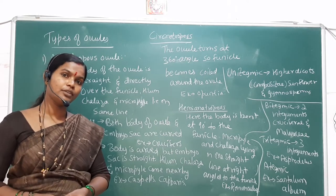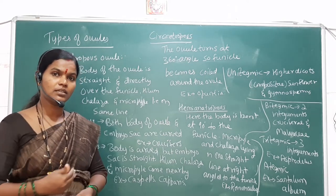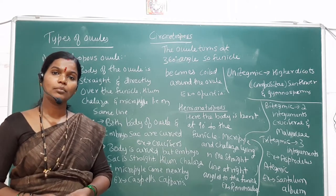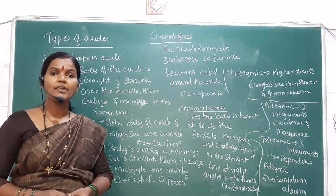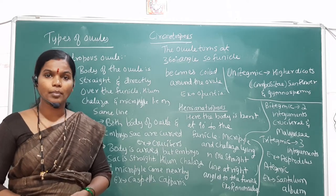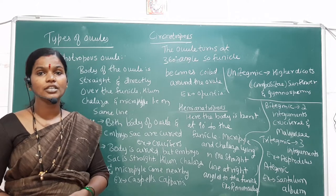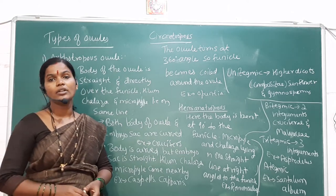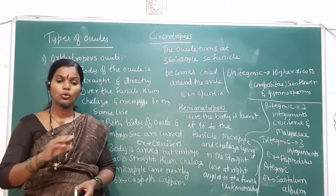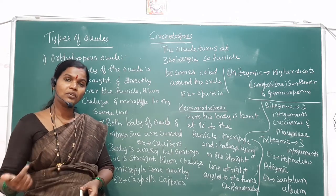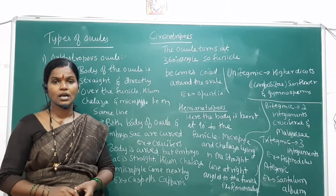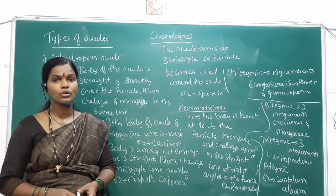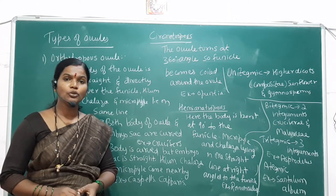The integuments are the coverings or layers which protect the embryo and the inner cells. After fertilization, when the ovule itself converts into a seed, these integuments are converted into two layers: the outer testa and the inner tegma.